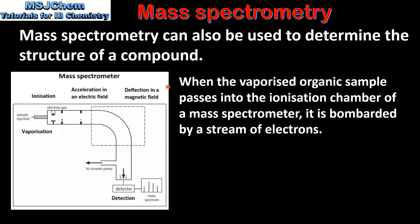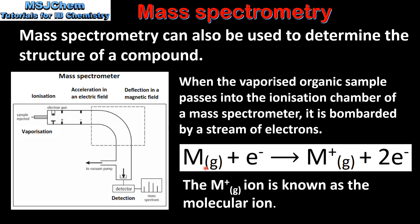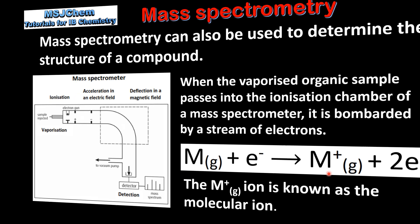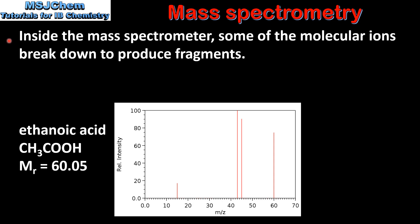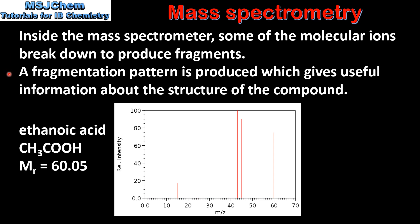When the vaporized organic sample passes into the ionization chamber of a mass spectrometer, it is bombarded by a stream of electrons. The gaseous organic compound is bombarded by electrons, producing the molecular ion, which is then accelerated in an electric field. Inside the mass spectrometer, some of the molecular ions break down to produce fragments, and a fragmentation pattern is produced which gives useful information about the structure of the compound.